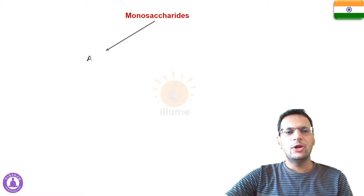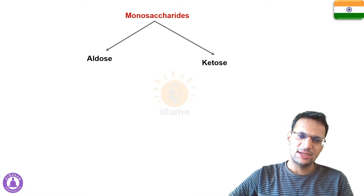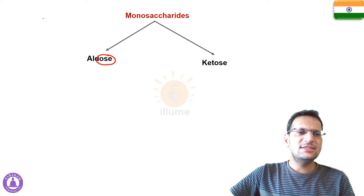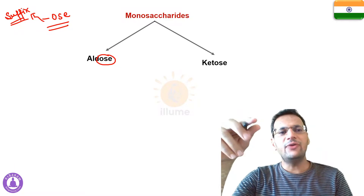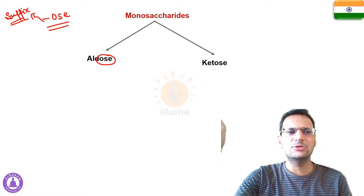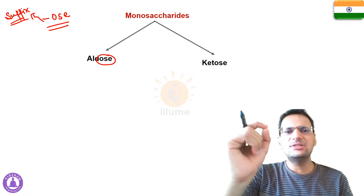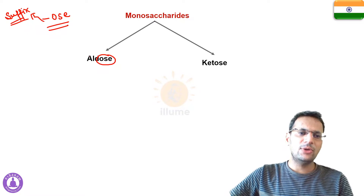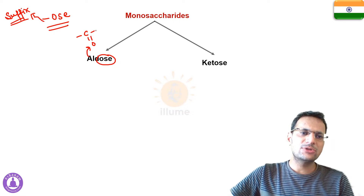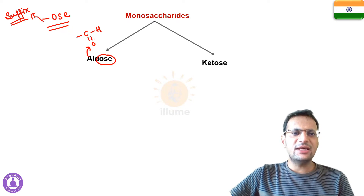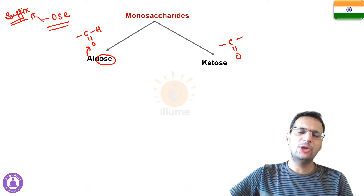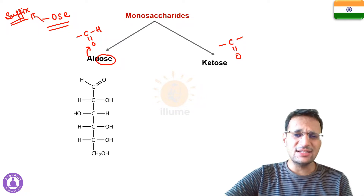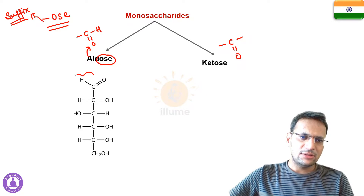Monosaccharides are basically of two types: aldose and ketose. The suffix '-ose' is used for sugar — that's why every monosaccharide or disaccharide has the suffix '-ose,' like glucose, fructose, galactose, mannose, and heptose. If the sugar molecule has an aldehyde group, it is called an aldose. If it has a carbonyl (ketonic) group, it is a ketose sugar.